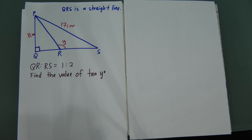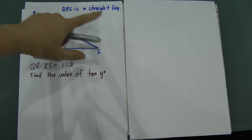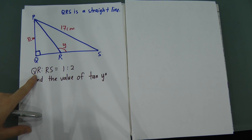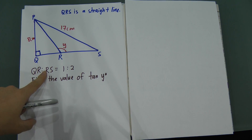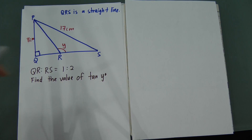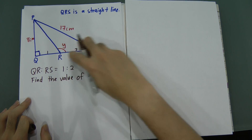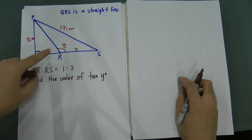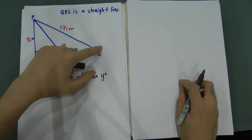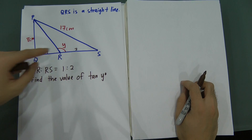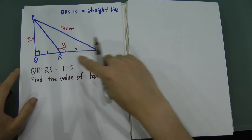A few pieces of information are given. QRS is a straight line, and the ratio of QR to RS is 1:2. I'll mark down the information — so QR is one part and RS is two parts. For ratio, it's very important to know that ratio is not the real length value. One doesn't mean one centimeter and two doesn't mean two centimeters — this is just a ratio, so we have to find the actual lengths.